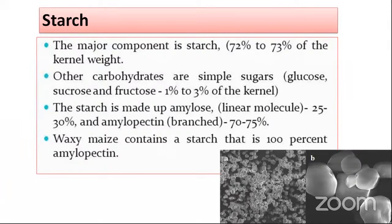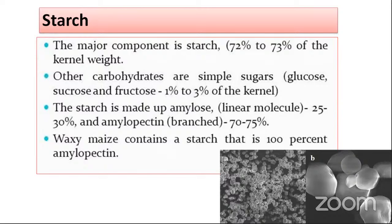Starch constitutes around 70 percent of the kernel weight. Other carbohydrates present are in the form of glucose, sucrose, and fructose — some monosaccharides and disaccharides — which constitute around one to three percent. Starch is made up of two types of molecules: amylose, which is a linear structure, and amylopectin, which is a branched polymer. The concentration of amylose ranges from 25 to 35 percent, and amylopectin is approximately 70 to 75 percent.